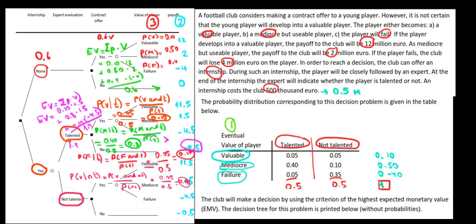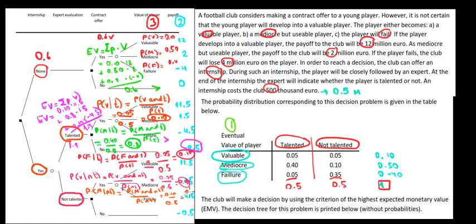Using the same logic, the probability of being a mediocre player given that he is not talented equals the probability of being mediocre and not talented divided by the probability of not being talented. That's 0.10 divided by 0.5, which equals 0.2.